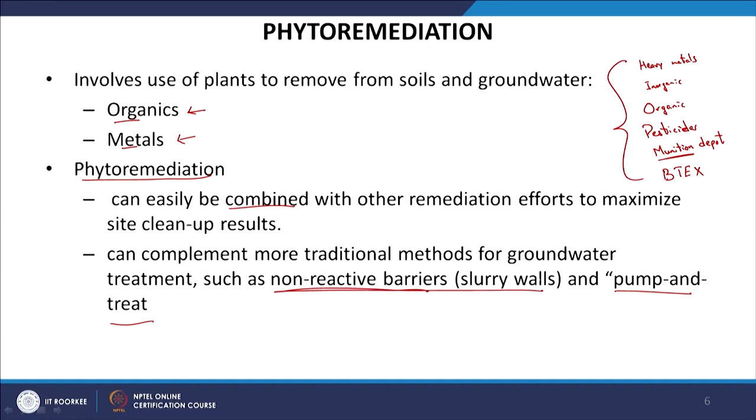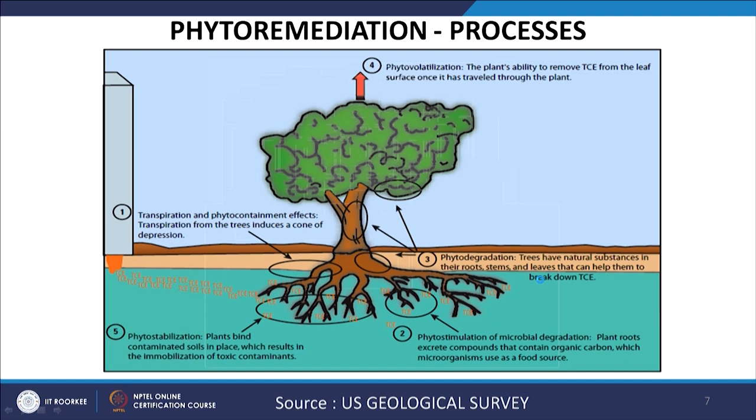When contamination is at depth, non-reactive barriers such as slurry walls can be used to prevent transport offsite while keeping the contaminant available for plant degradation. In this case, a naval air force base adjacent to a naval air station sustained contamination through use of chlorinated solvents — primarily TCE — in the manufacture and assembly of military aircraft. The contaminated plume has a central lobe, southern lobe, and northern lobe, with groundwater flowing southeast.